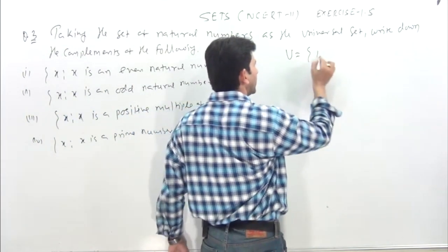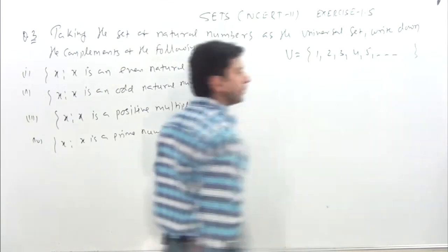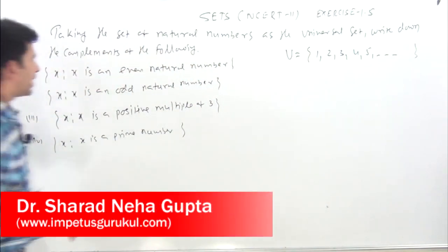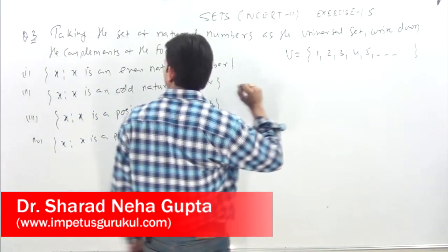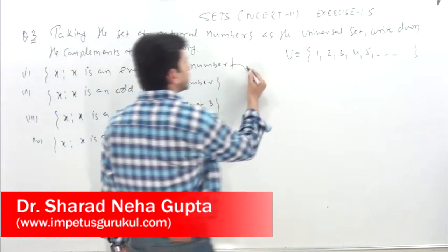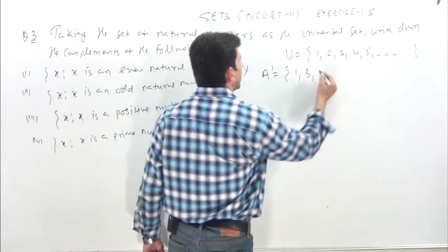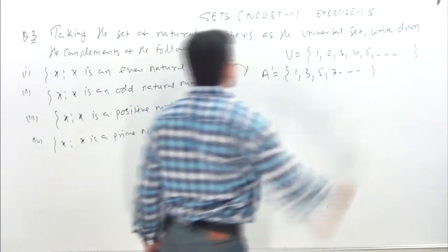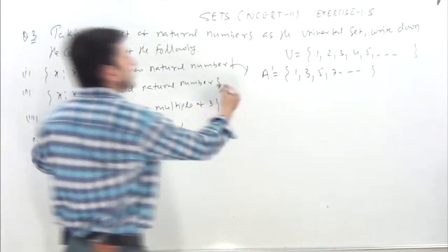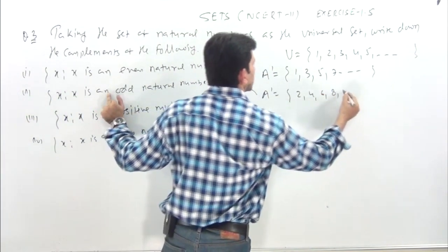Universal set is natural numbers. If A = {x : x is an even natural number}, then A complement will be odd natural numbers: {1, 3, 5, 7, ...}. If x is an odd natural number, then its complement will obviously be even numbers. How simple these questions are.